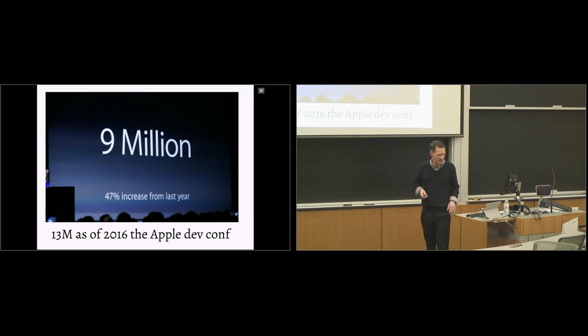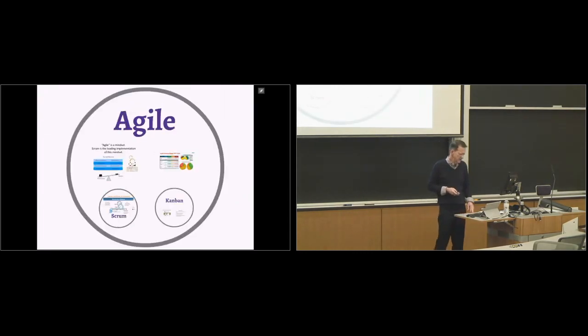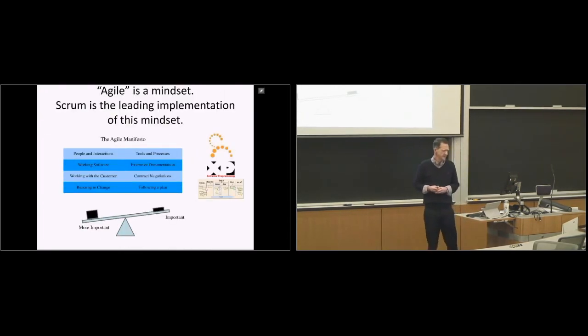And as of last year, there were about 13 million independent developers for Apple. Now, imagine if you had to use traditional management in that ecosystem. How long would it take, for example, annual reviews of 13 million people? It's just not possible, right? So it's a completely different way of organizing internally and with external networks.